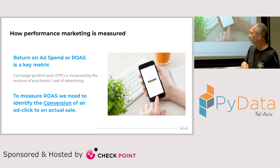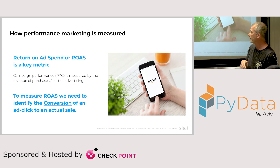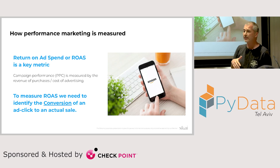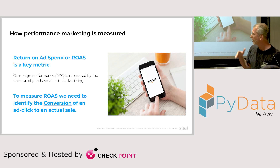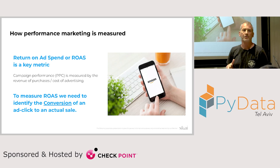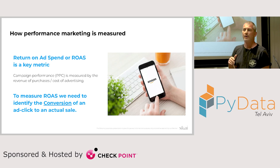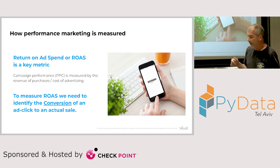This ratio — return on ad spend, ROAS, or ROI — we use those terms interchangeably. In order to measure this ROAS ratio, we basically need to identify the sale or the conversion. When we call it a conversion, the meaning is when a click turns into an actual purchase. We need to identify these conversions, match them to the relevant click, and that way we can calculate the campaign efficiency.